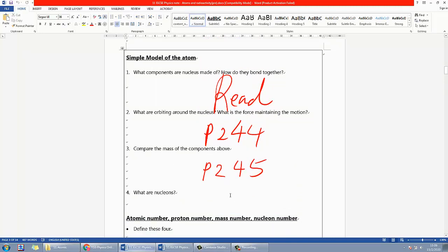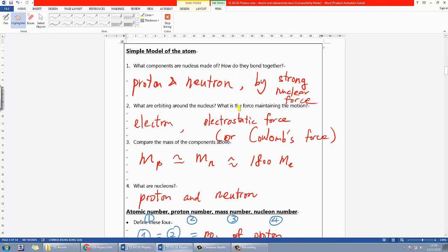Here are the answers. The first question asks about nucleus components, which are protons and neutrons - the only two things. They bond together by a force called strong nuclear force, or some people just call it strong force. In IB physics you learn more about it. For now, it's called strong nuclear force and it is an attraction force.